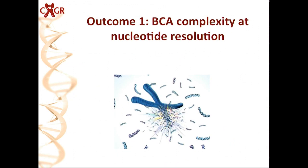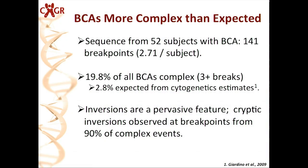One outcome we discovered is that these events are actually much more complex than we ever understood once we started looking at them under the microscope of whole genome sequencing. We expected around a 2.8% complex event outcome — what we had known from cytogenetic testing. When we sequenced 52 different subjects with a chromosomal abnormality, we found almost 20% were complex. What was very unique was that at the breakpoints of 90% of these complex events, you saw one or more cryptic inversions — small inversions at the breakpoint of what we thought was just a standard chromosomal rearrangement — and we thought that pointed to mechanism.